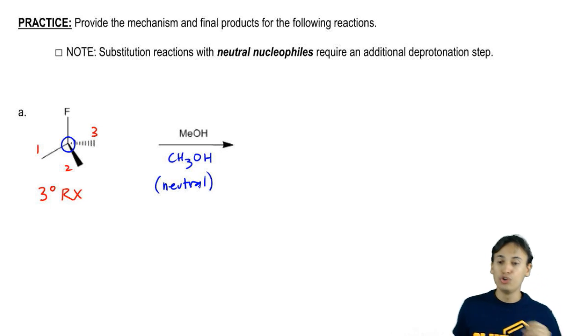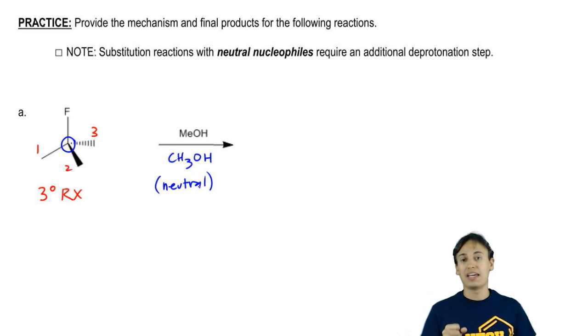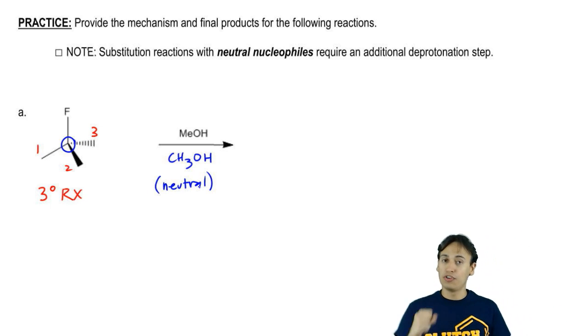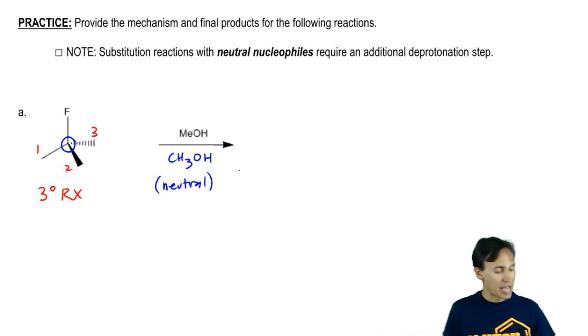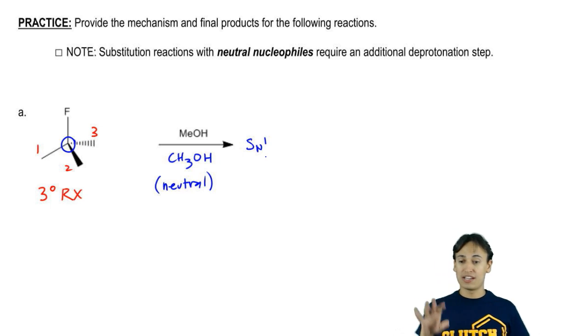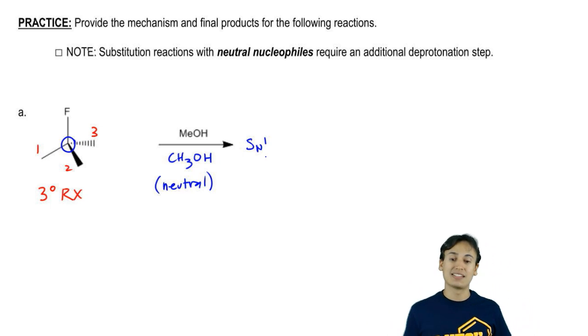What did we learn about neutral nucleophiles and highly substituted leaving groups? They prefer to react in SN1. If we had to pick between the two, would this be SN2 or SN1? It makes sense that this would be SN1 because of those two factors. It's neutral and it's highly substituted, which is the opposite of what SN2 likes.